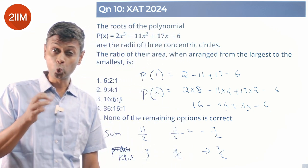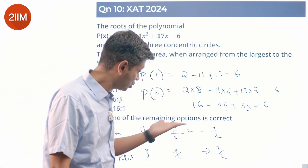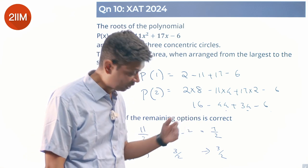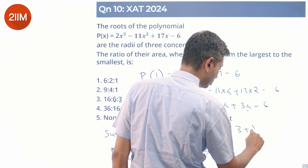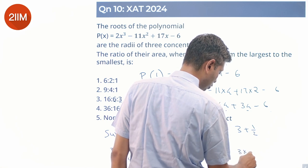The other two roots add up to 7/2 and multiply to give 3/2. Got this: 3 + 1/2, 3 × 1/2.